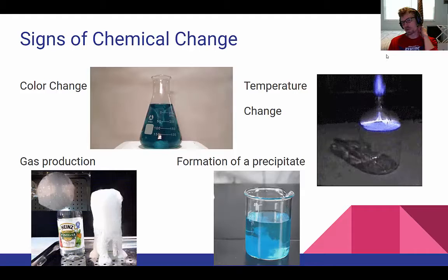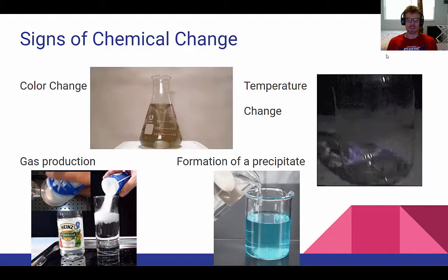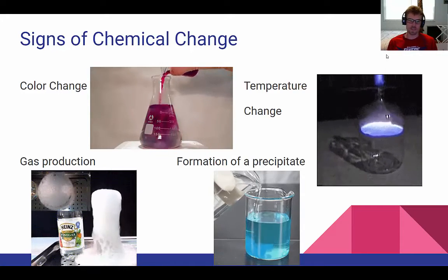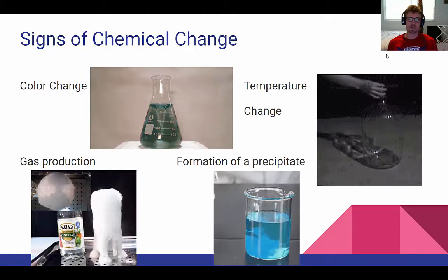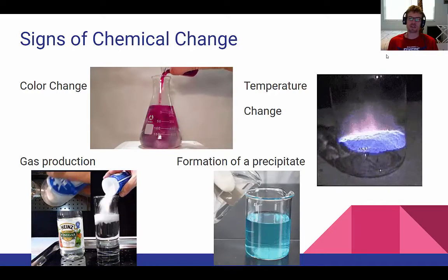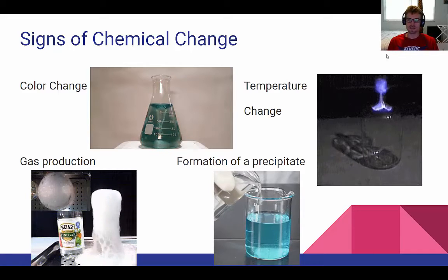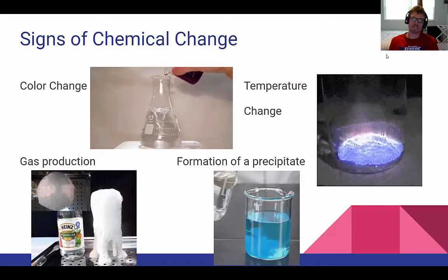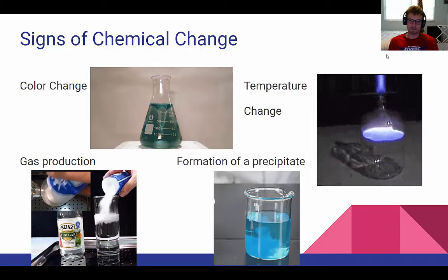There are four signs of a chemical change that you need to know. The first is a color change — a lot of times when something is going through a chemical change, its color is going to change. Think about the piece of paper: when it was burning, it changed from white to black. We can also have a temperature change. Temperature changes are oftentimes examples of chemical reactions. If you've ever used those chemical ice packs where you break it and it gets cold, that's a chemical reaction that's actually cooling down — they don't always result in heating up.